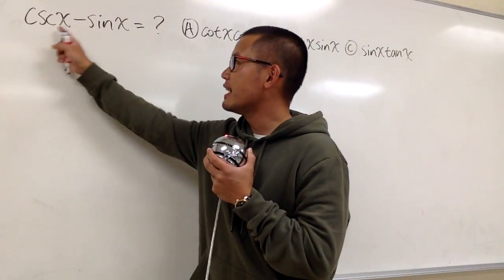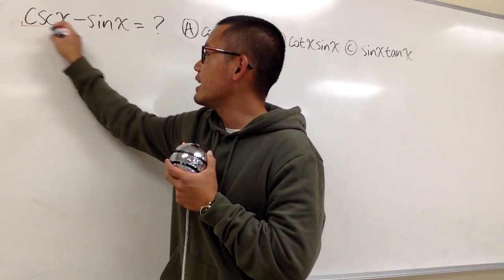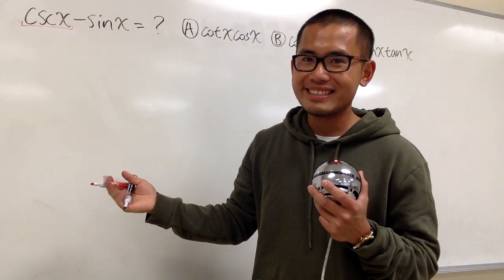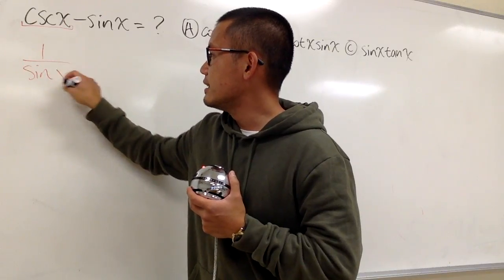Okay, here we have cosecant x minus sin x is equal to what? Well, we notice that we have the cosecant x. Let's write that as what? This is the same as 1 over sin x, isn't it?